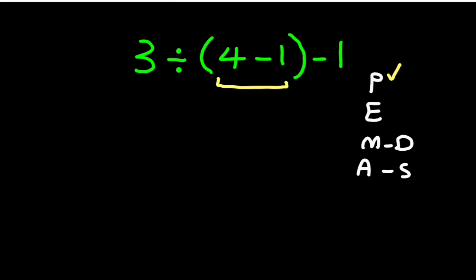Let's rewrite the expression. We have 3 divided by 3 minus 1. Now in the next step we have one division and one subtraction, and as we know according to the PEMDAS, division has higher priority than subtraction.